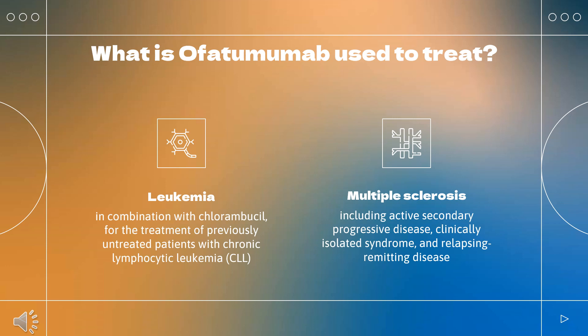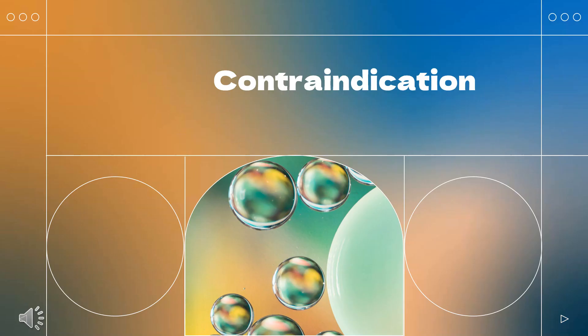Ofatumumab is also indicated for the treatment of adult patients with relapsing forms of multiple sclerosis, including active secondary progressive disease, clinically isolated syndrome, and relapsing-remitting disease.